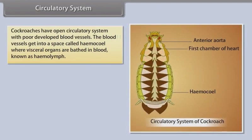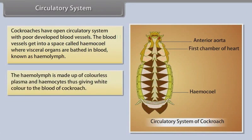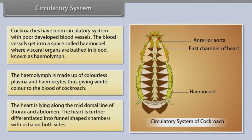Circulatory System. Cockroaches have an open circulatory system with poorly developed blood vessels. The blood vessels open into a space called haemocoel, where vascular organs are bathed in blood known as haemolymph. The haemolymph is made up of colorless plasma, giving a white color to the blood of cockroach. The heart lies along the mid-dorsal line of thorax and abdomen, and is differentiated into funnel-shaped chambers with ostia on both sides.